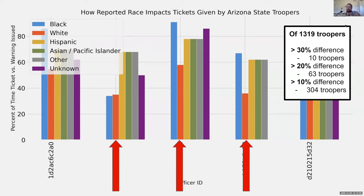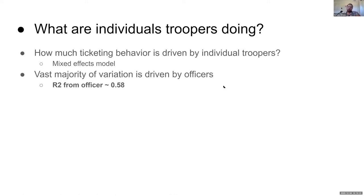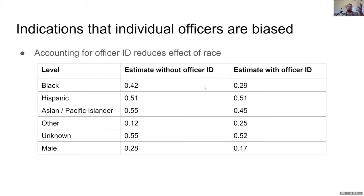Out of 1,300 troopers in this dataset, 10 are showing at least a greater than 30% difference — bias against one non-white group. 63 of these troopers are showing at least a 20% difference, and over 300 are showing greater than a 10% difference against one non-white group. These are very robust because they're stopping thousands of individuals — that's what state troopers do all day. Using a mixed effects model, I found that the vast majority of variation in ticket outcomes is driven by individual officers — explaining 60% of the variation. Some are very aggressive, some are not.